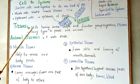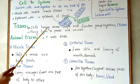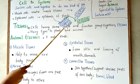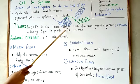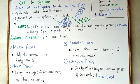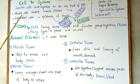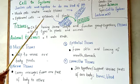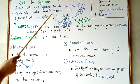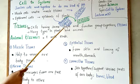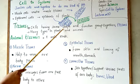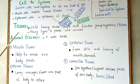So let's study about tissues. What are tissues? When cells which perform similar functions and have similar shape group together, they form tissues. For example, muscle cells perform the same function of movement and combine together to form muscle tissues. Cells having the same shape and function group together to form tissues.